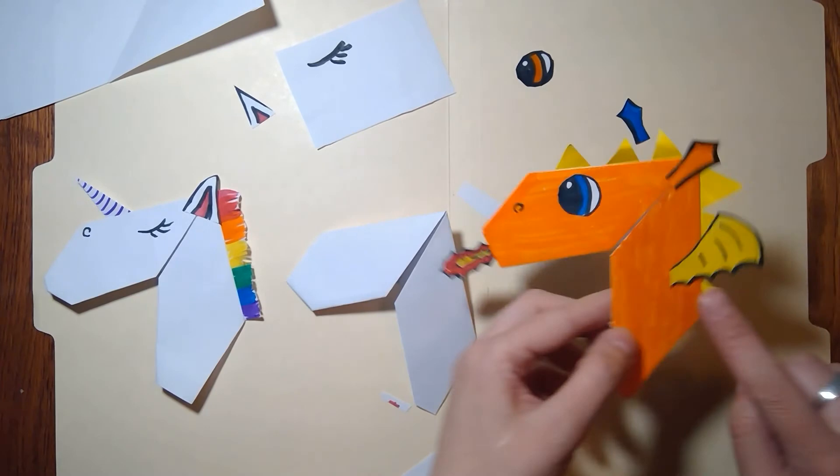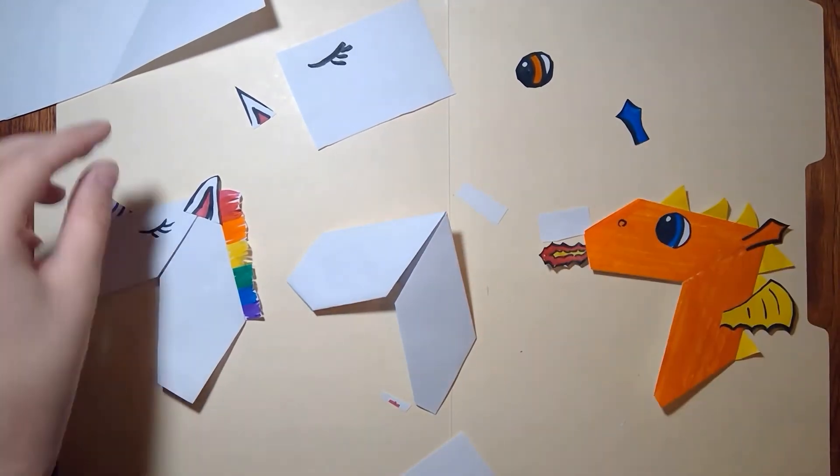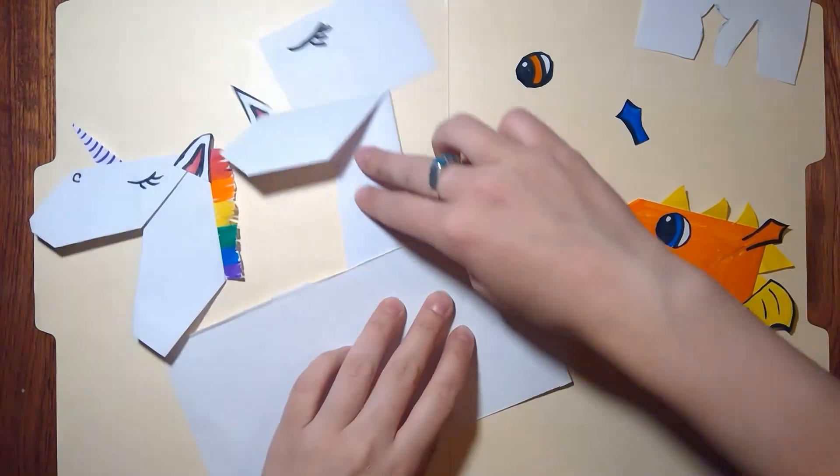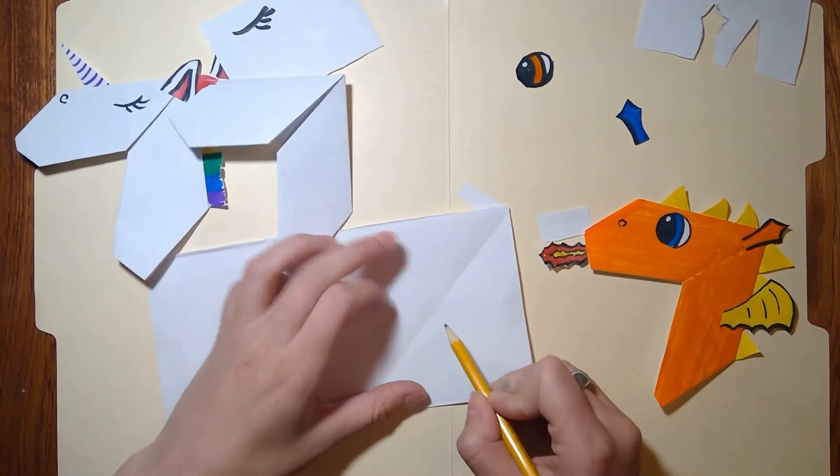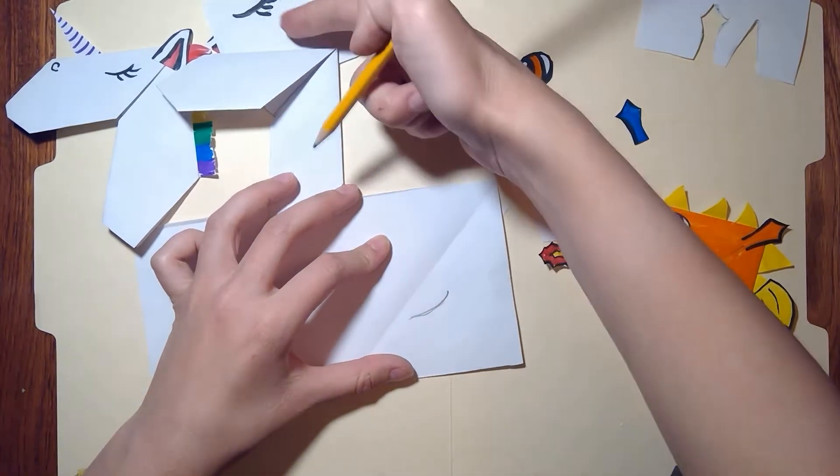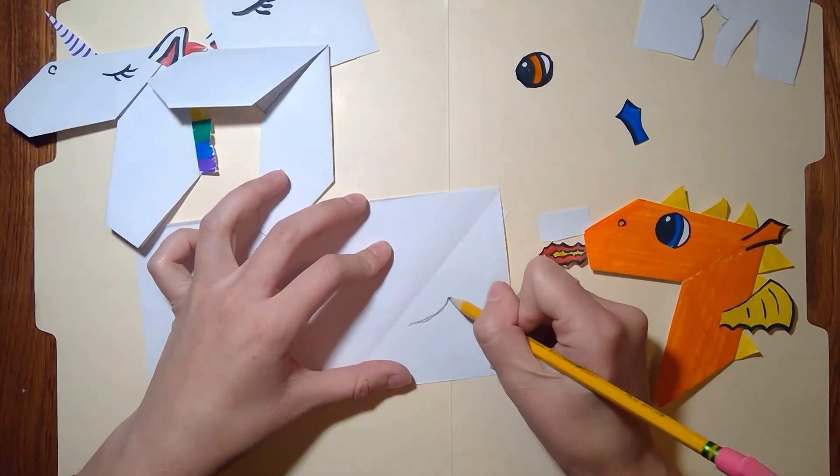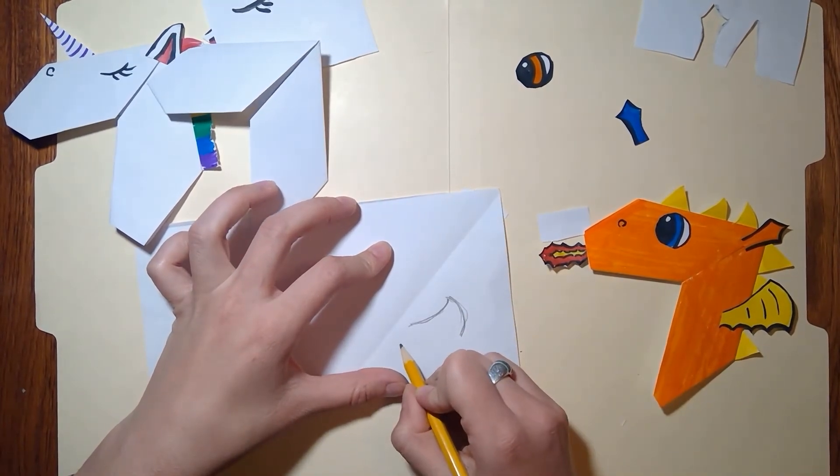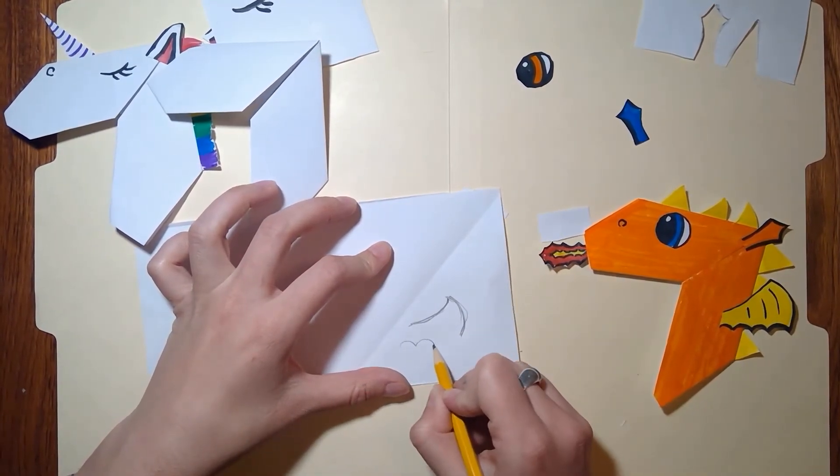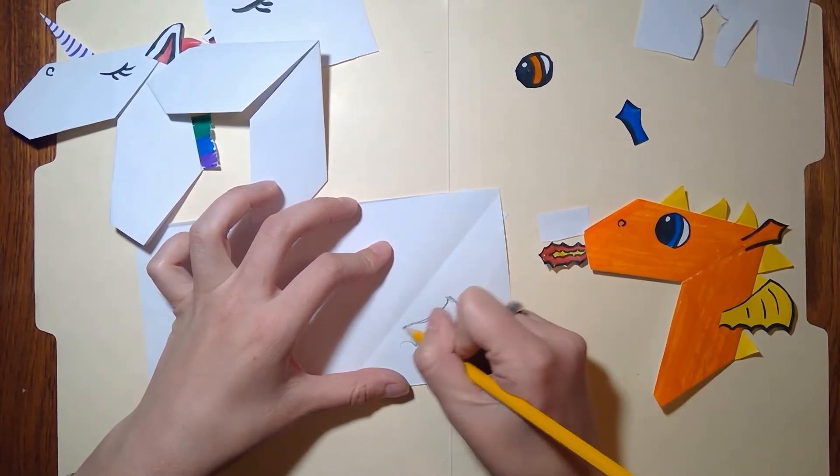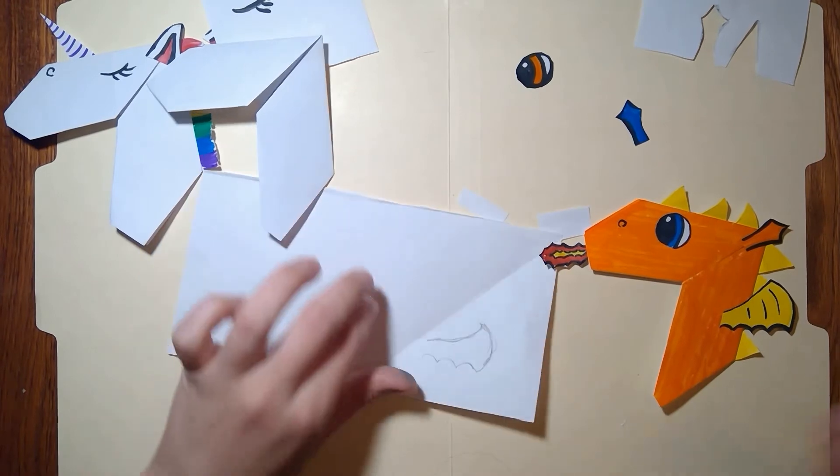And then I'm going to show you how to make the wing here on this scrap paper. You're going to make a curve up, kind of like our eye we did here, and a curve down. And you can draw this out first and cut it out later. Oops. I'm glad I drew it out. You can make a wing just like that.